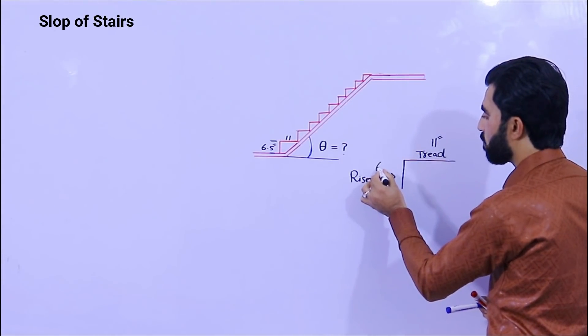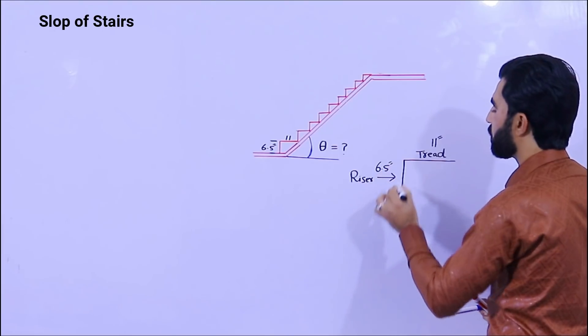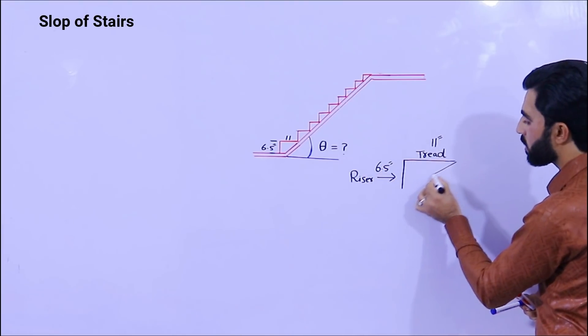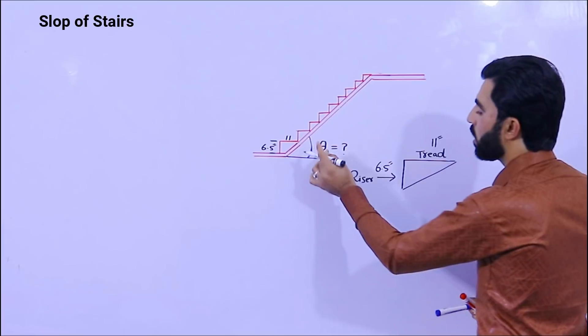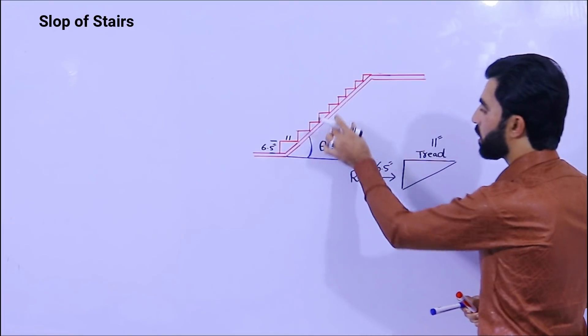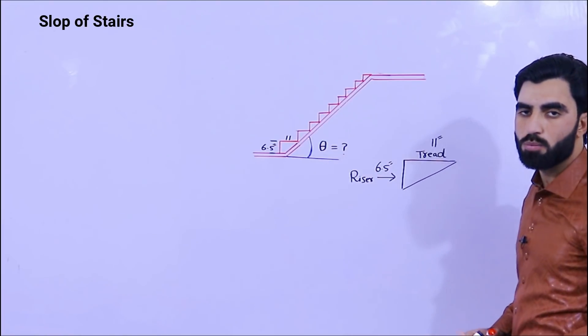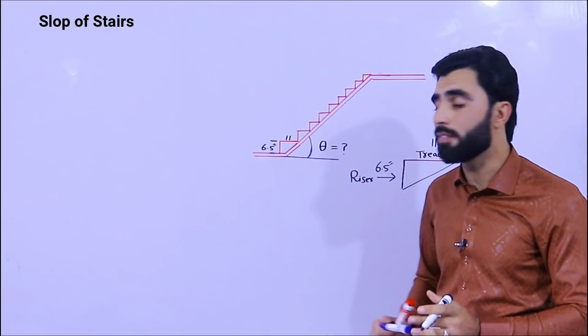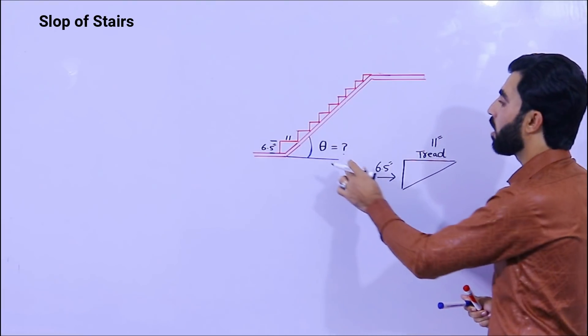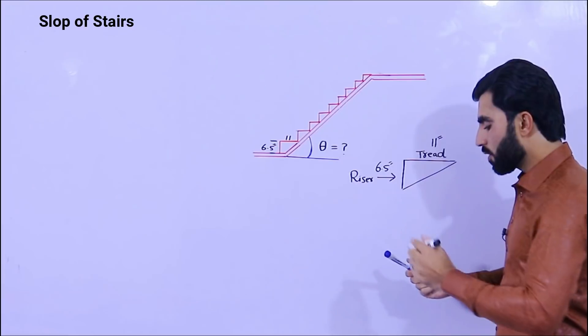And riser is 6.5 inches. So for this stair or stairs, what should be the angle of this stair if the riser is 6.5 and the tread is 11 inches?